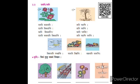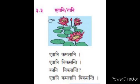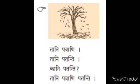Neuter gender — napunsakalinga. Ethani and tani. Ethani is the plural form of etat, and tani is the plural form of tat. First picture: ethani kamalani — these are lotuses. Ethani vikasanti — these are blooming. Kaani vikasanti? — Which are blooming? Ethani kamalani vikasanti — these lotuses are blooming. Second picture: tani patrani — those are leaves. Tani patanti — those are falling. Kaani patanti? — Which are falling? Tani patrani patanti — those leaves are falling.